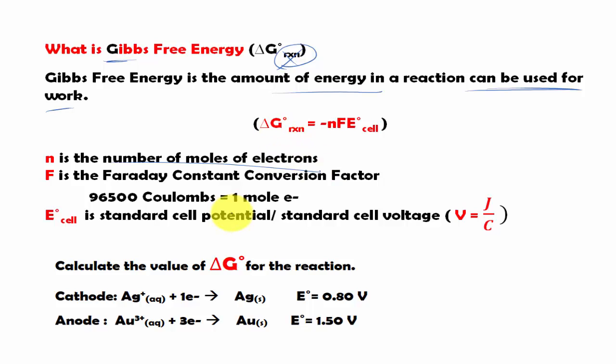And then F is the Faraday constant. Now this constant is 96,500 coulombs per mole of electron. So we can express it as a conversion factor. Keep in mind, the Faraday constant is a conversion factor as well.